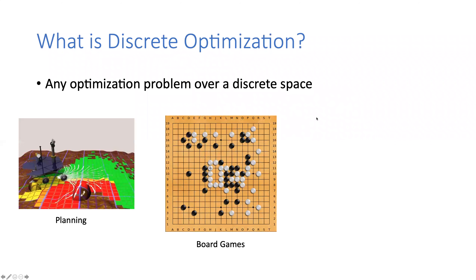So what is discrete optimization? At a high level, discrete optimization is any optimization problem over a discrete space. On the left, you see a planning problem where there's an obstacle in front of the rover. The rover needs to decide if it's going to go left or right of this obstacle — that's a discrete decision. There's no way to continuously map out an action space that allows you to go in between the obstacles.